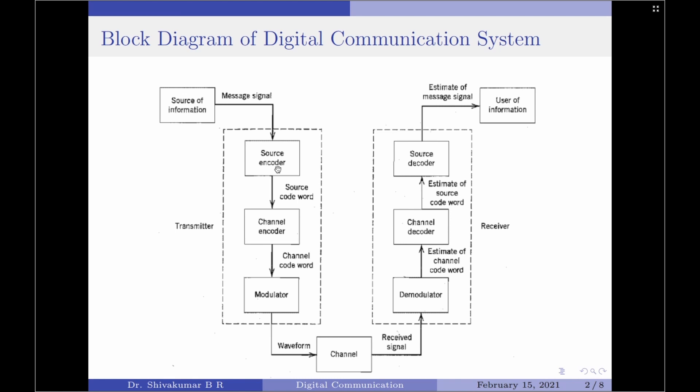Now let me discuss each of the blocks of the transmitter and receiver in brief detail. I'll start with source encoder. In source coding, the encoder maps the digital signal generated at the source output into another signal in digital form. The resulting sequence of symbols is called the source code word. The mapping is one-to-one and the objective is to eliminate or reduce redundancy so as to provide an efficient representation of the source output.